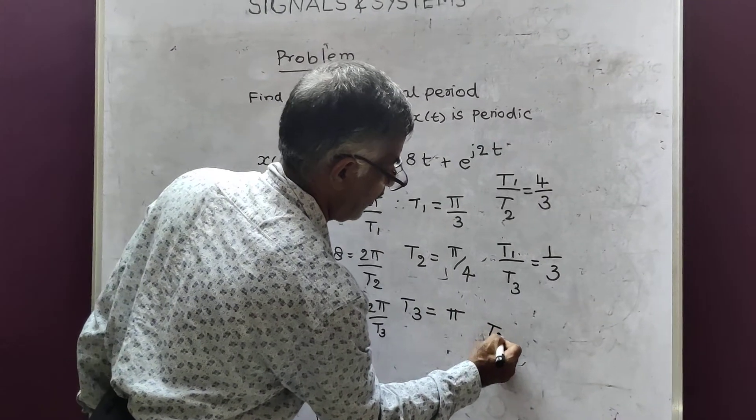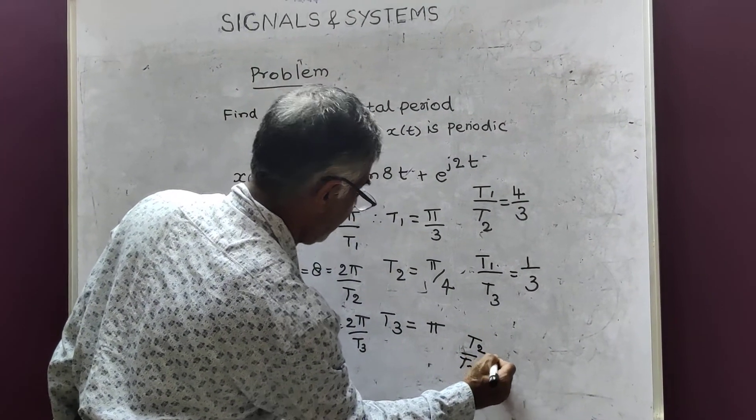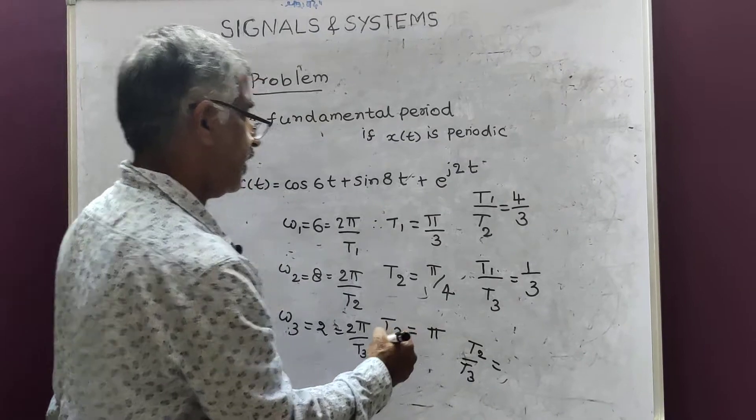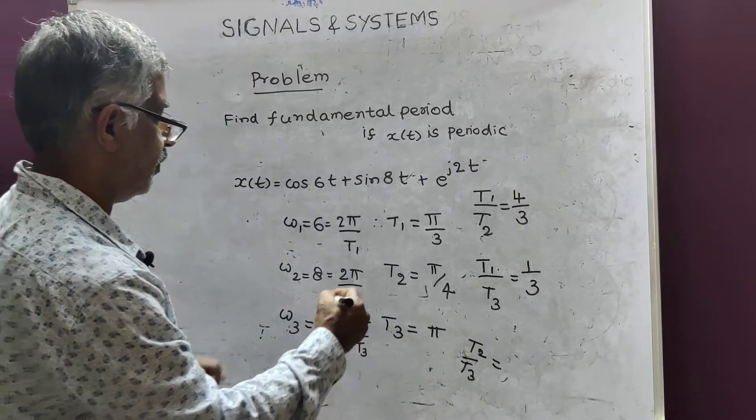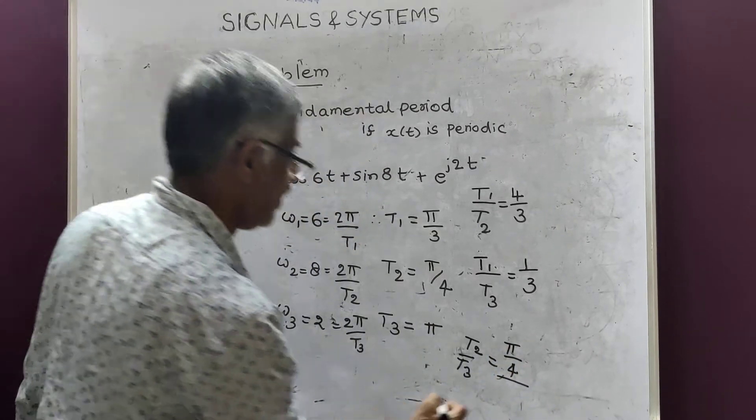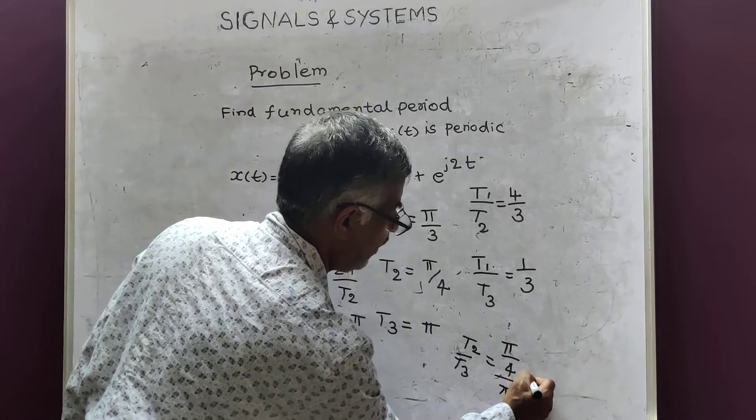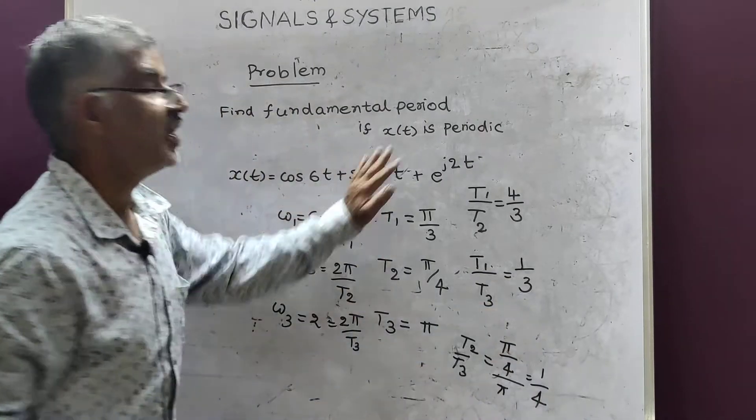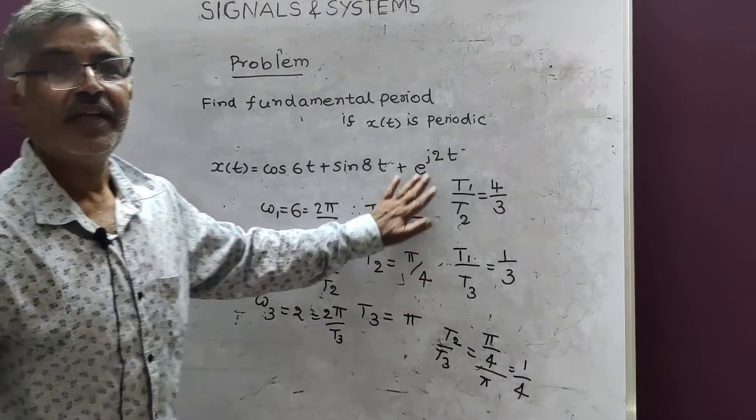Or you can take t2 by t3. t2 by t3 is equal to π by 4 by π. So, we are getting 1 by 4. So, condition is satisfied.